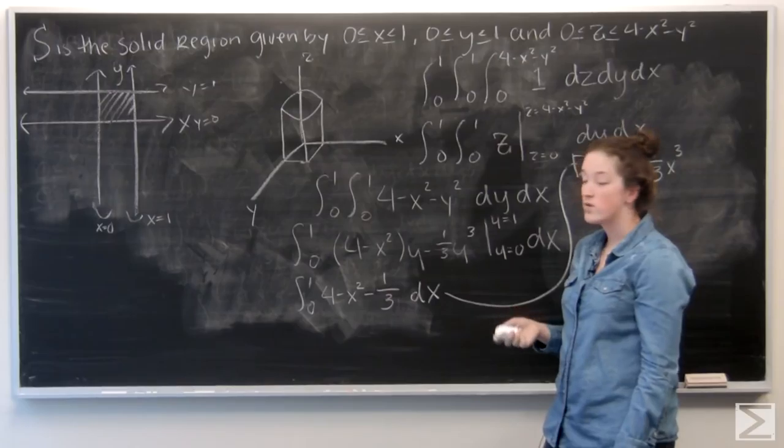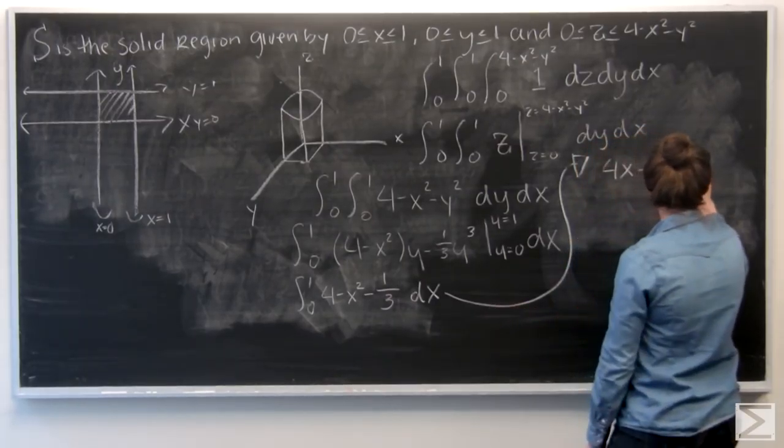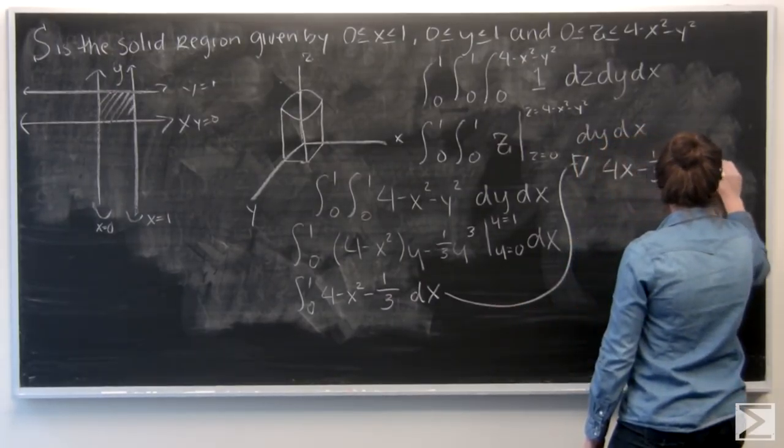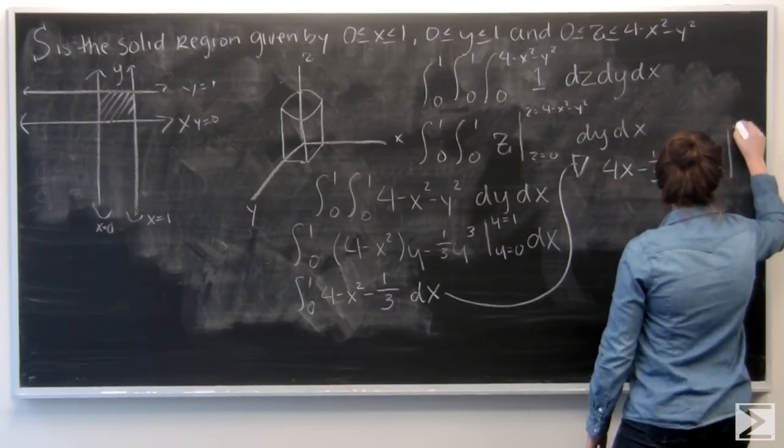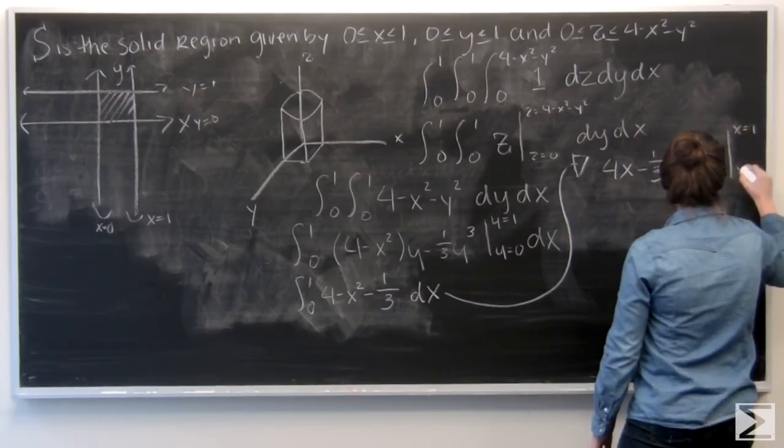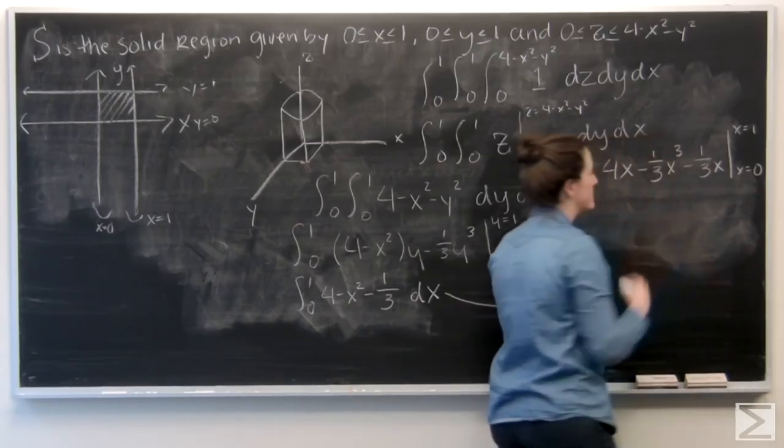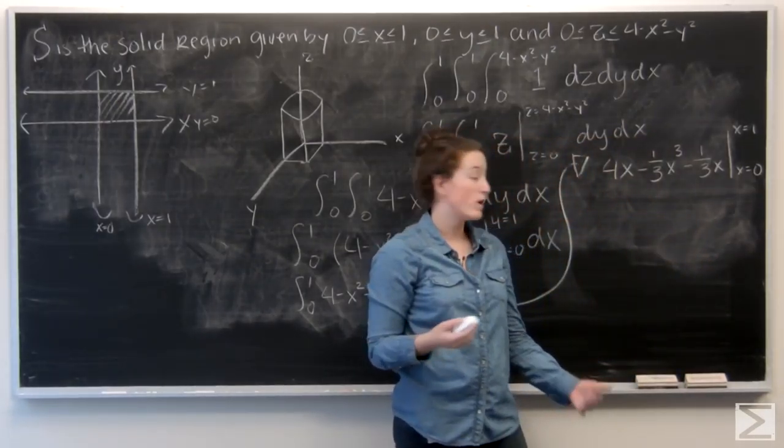And negative 1 third becomes negative 1 third x. And now I want to evaluate that from x equals 0 to x equals 1.